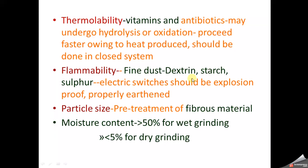Another factor is particle size. For fibrous materials like Glycyrrhiza glabra, pre-treatment such as cutting must be done first to further reduce the size, rather than undergoing size reduction all at once. Next is moisture content: if the moisture content is more than 50%, the material must be subjected to wet grinding, whereas if it is less than 5%, dry grinding is used.